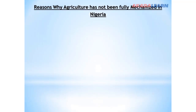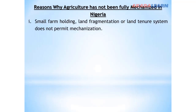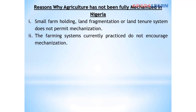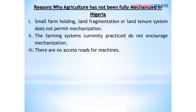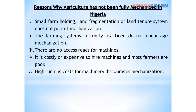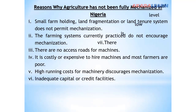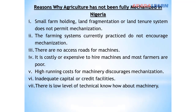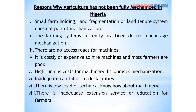Reasons why agriculture has not been fully mechanized in Nigeria: Small farm holdings — land fragmentation and the land tenure system do not permit mechanization. Current farming systems do not encourage mechanization. There are no access roads for machines. It is costly to hire machines and most farmers are poor. High running costs of farm machinery discourage mechanization. Inadequate capital or credit facilities, low level of technical know-how about machinery, and inadequate extension services or education for farmers.